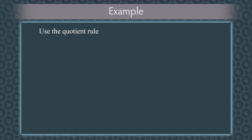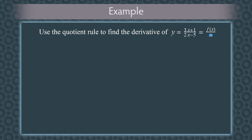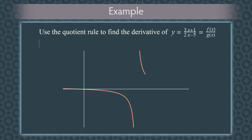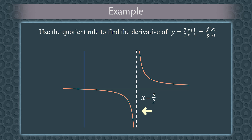Let's see an example. We'll use the quotient rule to find the derivative of y equals 3x plus 1 divided by 2x minus 5. This function is a quotient, and if you graph it, you get a hyperbola. It has an asymptote at x equals 5 halves, because when you plug in x equals 5 halves, you get 0 in the denominator, which gives you division by 0. This causes the function to blow up towards positive or negative infinity.